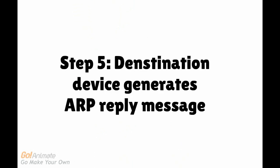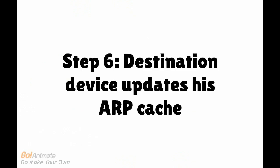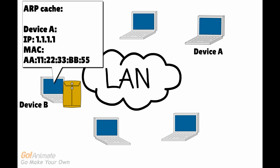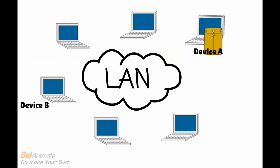After processing the ARP request message, in step 5, the destination device, device B, will generate an ARP reply message. This message will include device B's MAC address and IP address, sending it back to device A. It will also include device A's MAC address and IP address. In step 6, the destination device, device B, will update its ARP cache since it now knows device A's IP address and MAC address. In step 7, device B will send the ARP reply message back to device A.